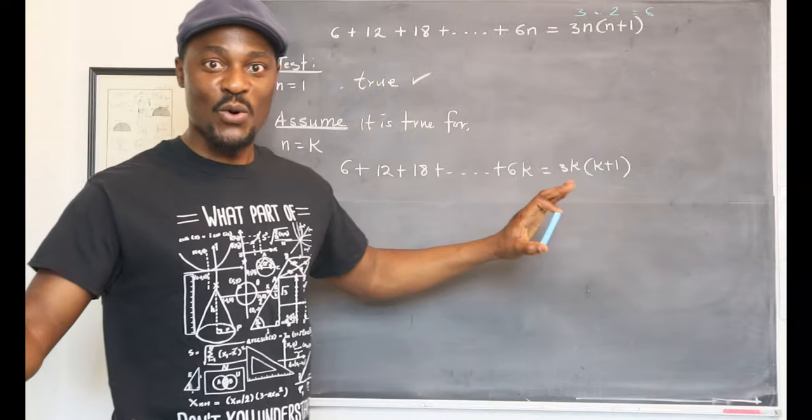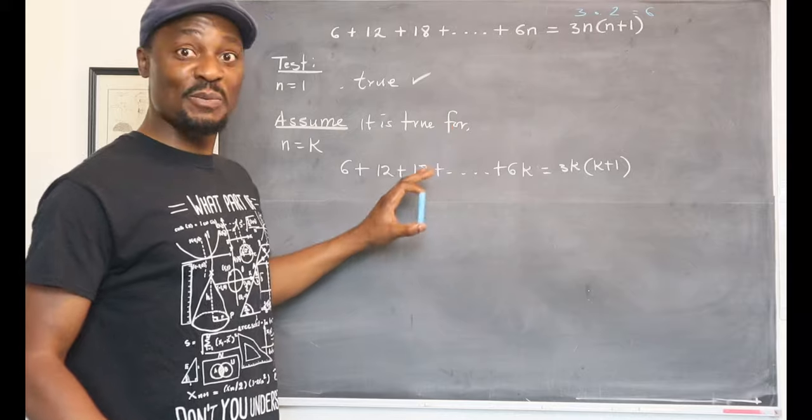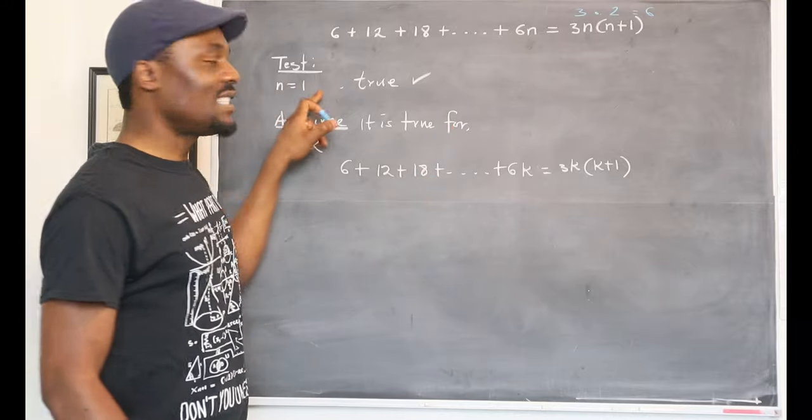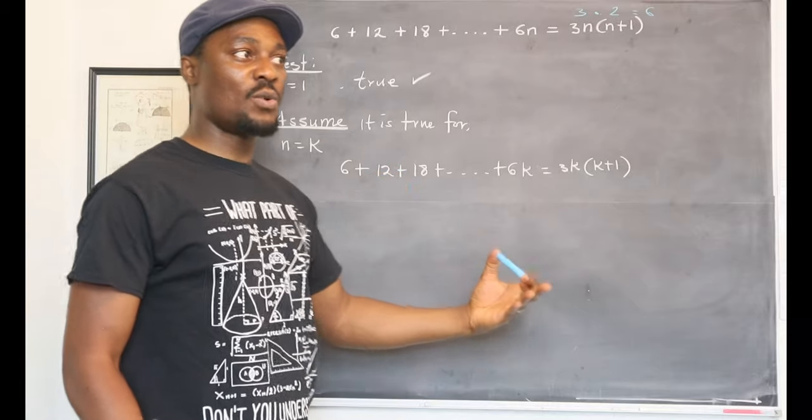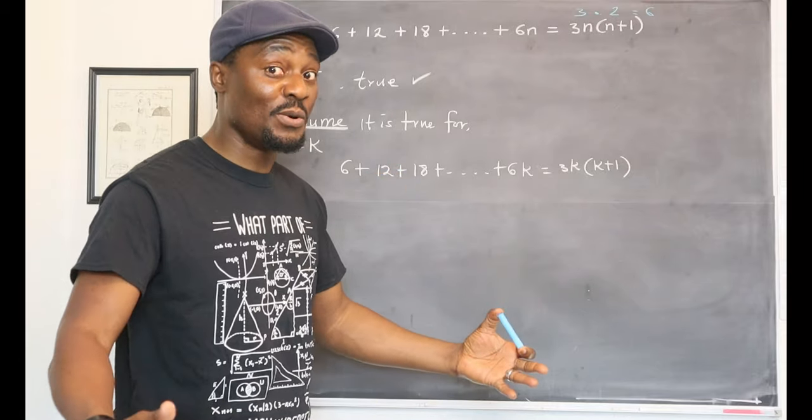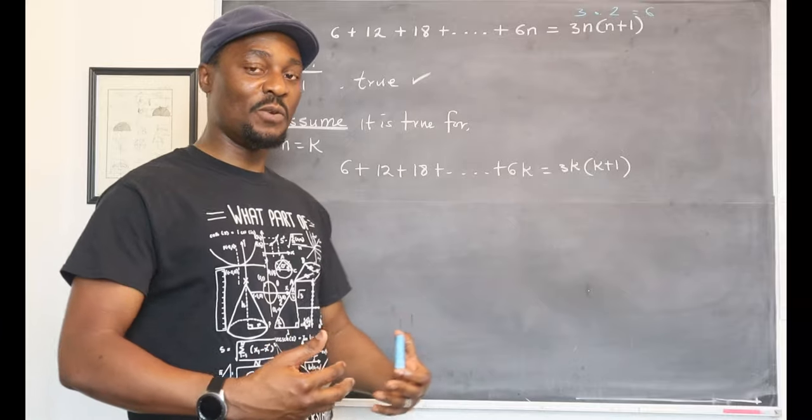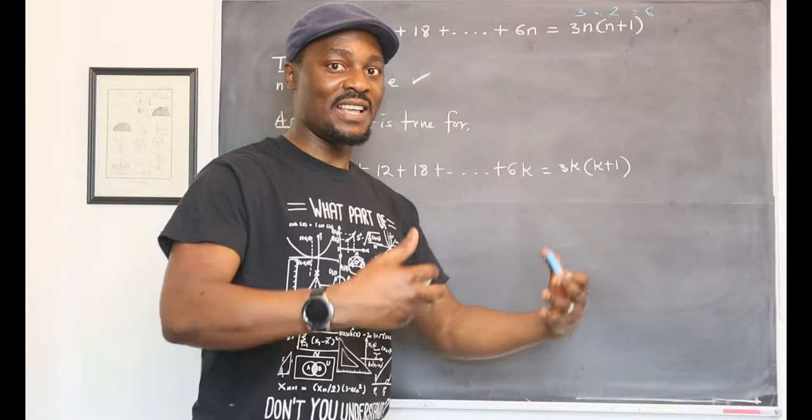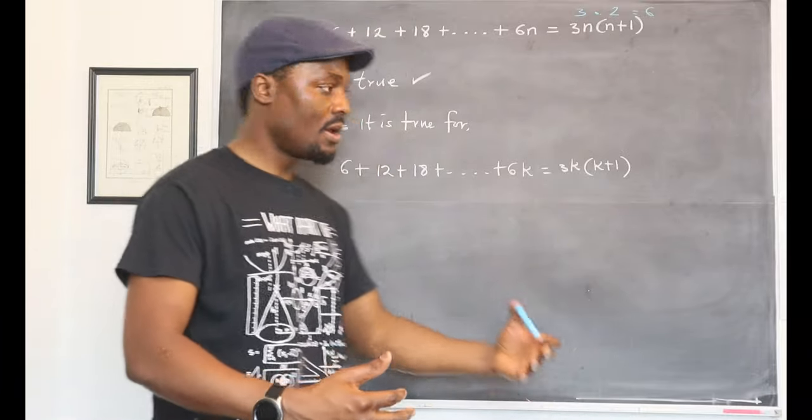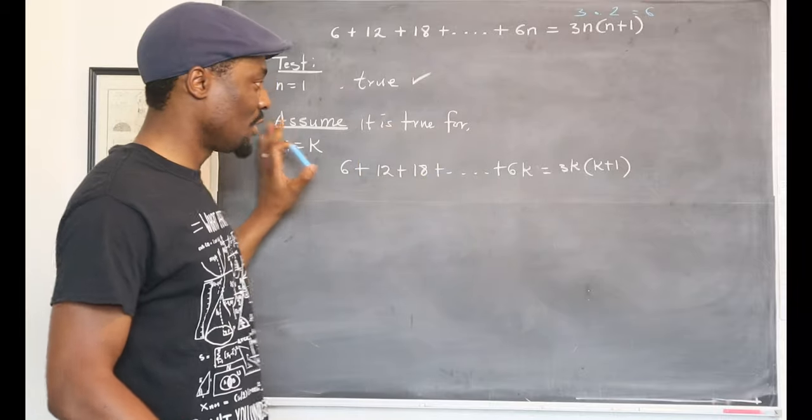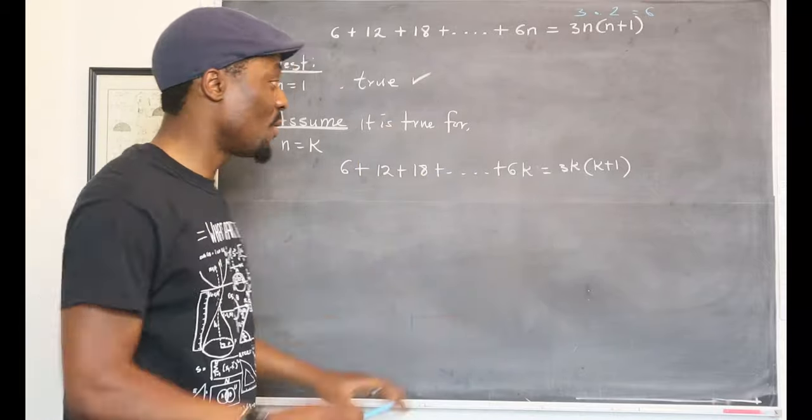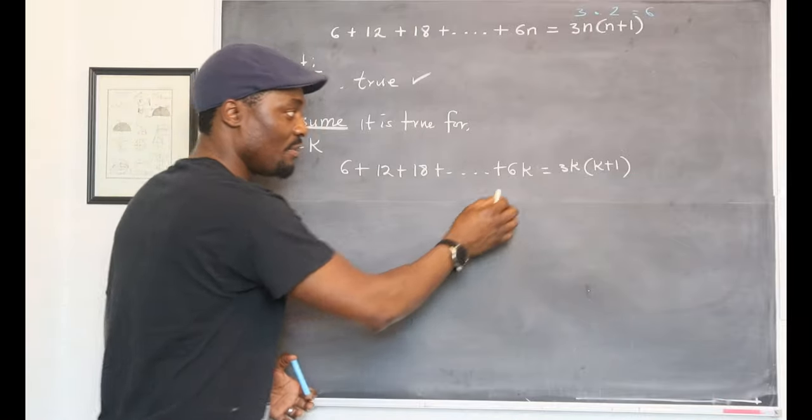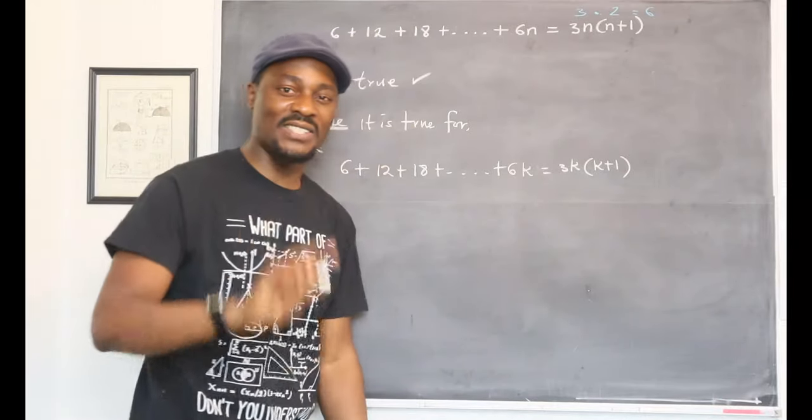Now, did we prove this? No, but we just assumed that it's going to be true because we already tested n equals 1. It was true. Will it be true for n equals 2? It should be true, but we're not sure. We're going to assume. Will it be true for any number that is a positive integer? We hope so, but we're just going to assume that it's true. We don't know what integer we're dealing with, so we say it's going to be k, so we're going to put k here. That's the second step.